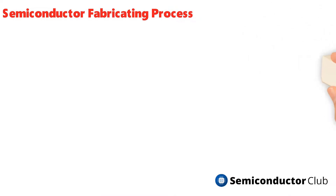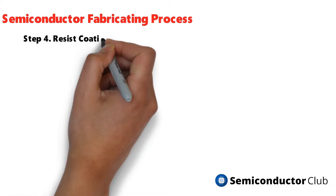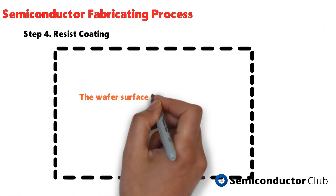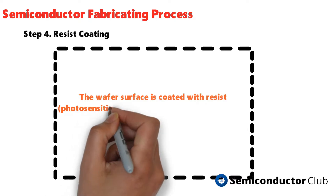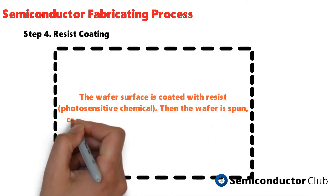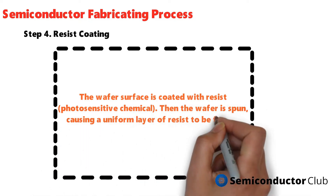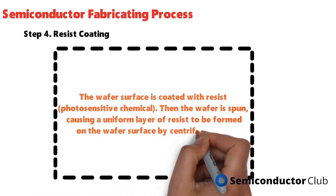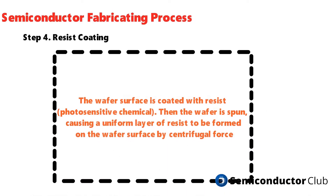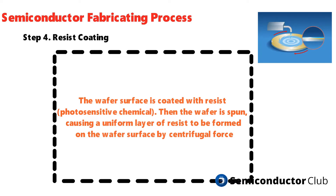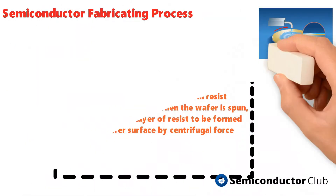Resist coating: the wafer surface is coated with resist, a photosensitive chemical. The wafer is then spun, causing a uniform layer of resist to be formed on the wafer surface by centrifugal force.